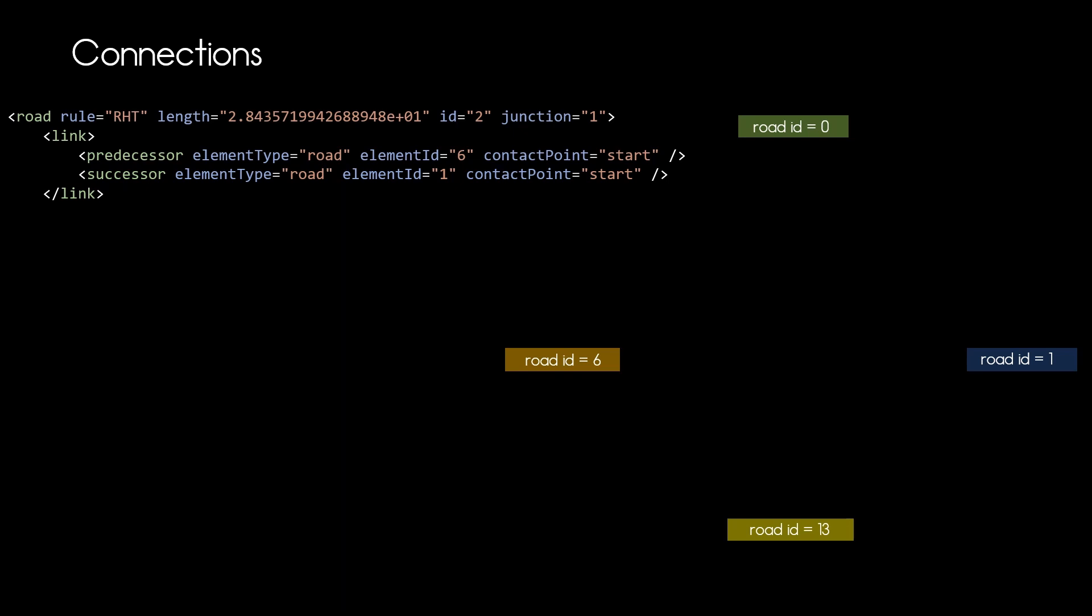In our case we will start with the connecting road of ID 2. That has as predecessor the incoming road with ID 6 and the successor with the road of ID 1. And here we see that connection. In the same manner we can establish all the other connections within our junction.